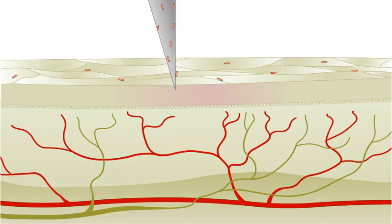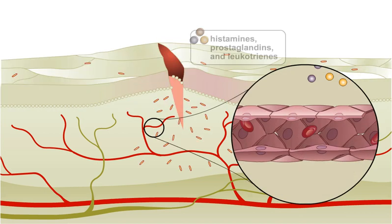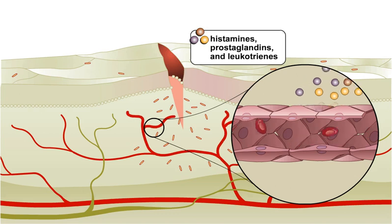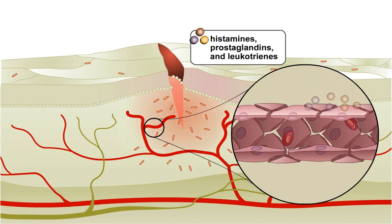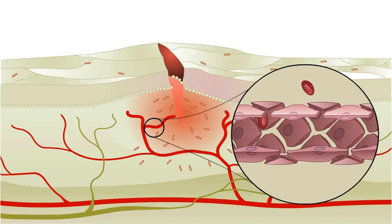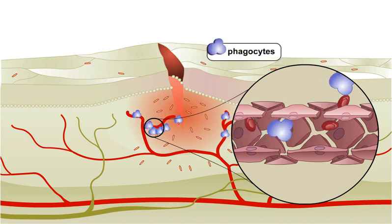Damage to the body's tissues through heat, chemicals, sunburn, cuts, or microbial infections triggers a general, nonspecific defensive response called inflammation. Signs and symptoms of inflammation include redness, pain, heat, swelling, and sometimes loss of function.